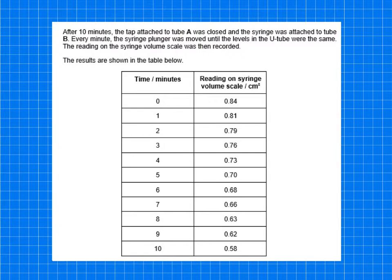They then show you some results. And it says after 10 minutes, the tap attached to tube A was closed. And then the syringe was attached to the tube B. So every minute, you can see there, the syringe plunger was moved until the levels in the U-tube were the same. The reading on the syringe volume scale was then recorded. So the recording on a syringe rather than in the manometer. And you can see over time what happens to the data. You can see there's a decrease in the volume.